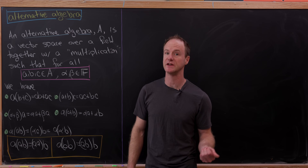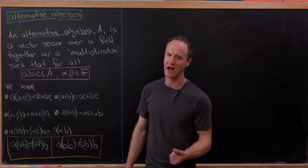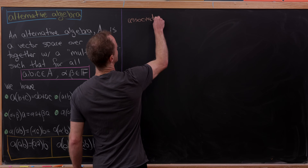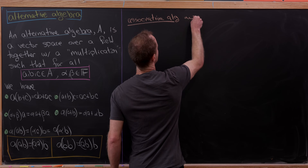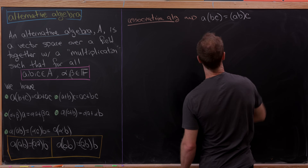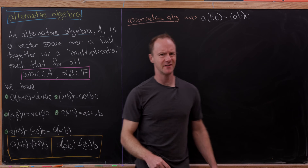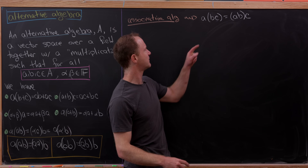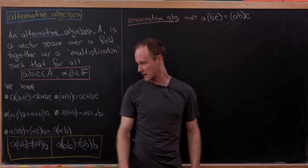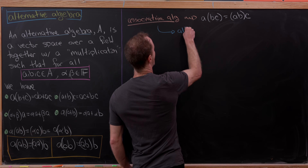Let's first notice that every associative algebra is most definitely an alternative algebra. For every associative algebra, you have A times BC equal to A times B times C for all A, B, and C in the algebra. If we replace C with B, we get the first rule, and with another replacement we get the second rule. So every associative algebra is alternative.